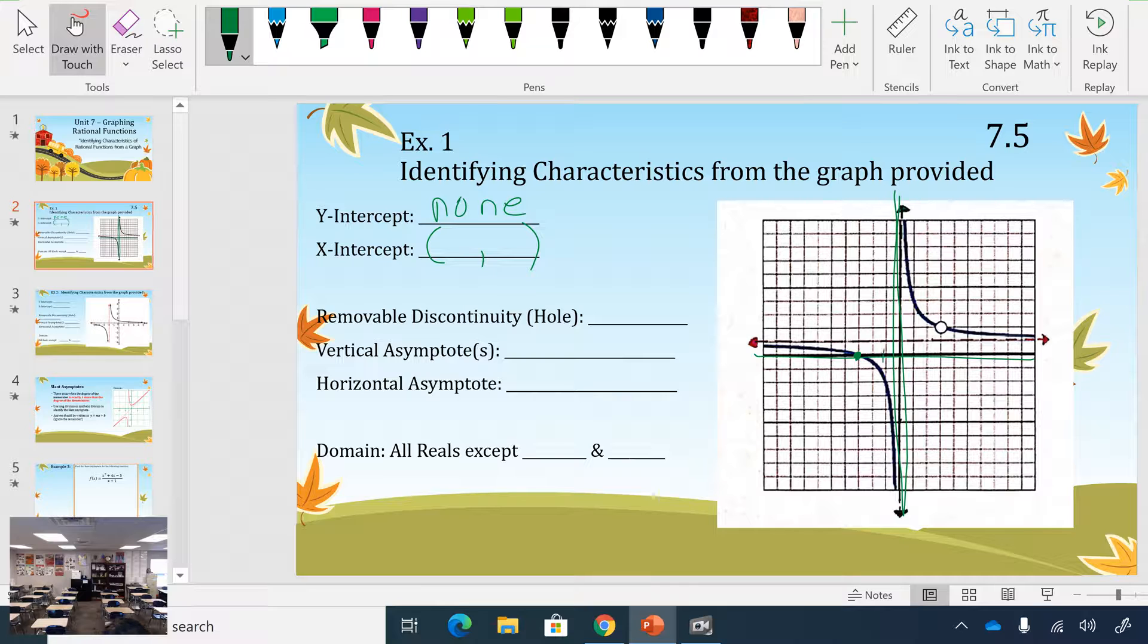So we're working off the graph. We can say 1, 2, 3. So we went left 3. So we know that if it's the x-intercept the y is going to be 0. So that one is basically looking and identifying, so you should be okay there.